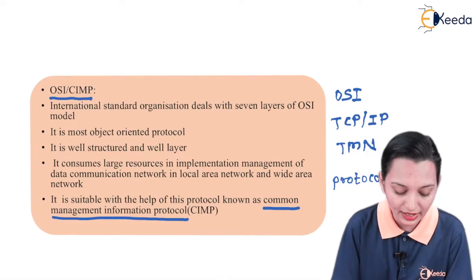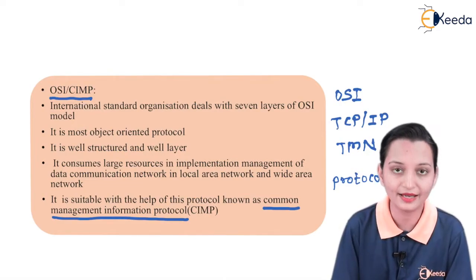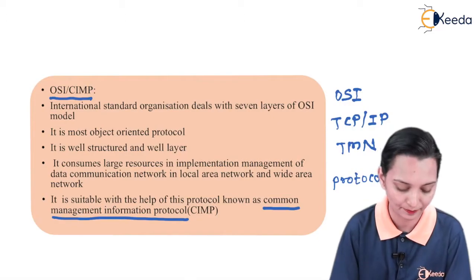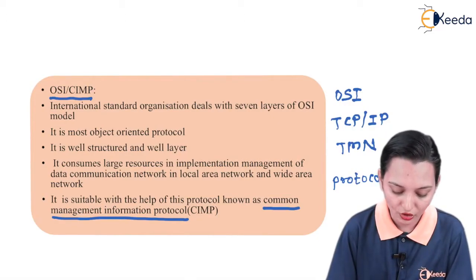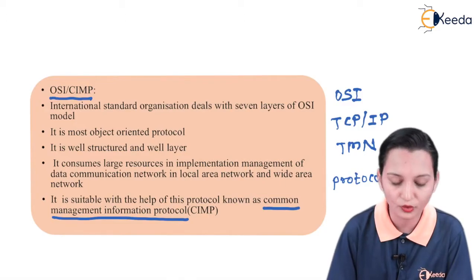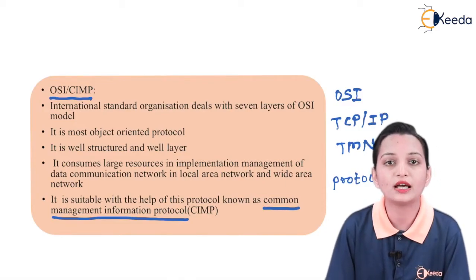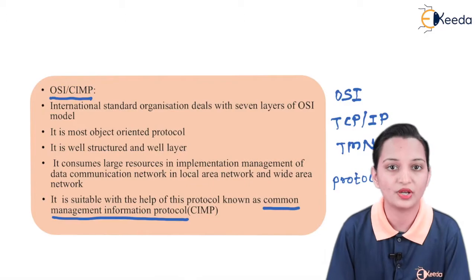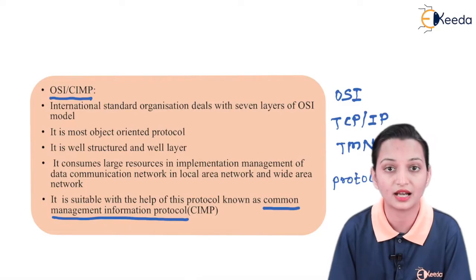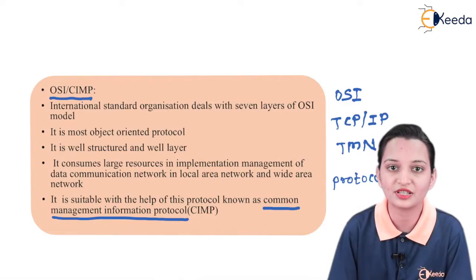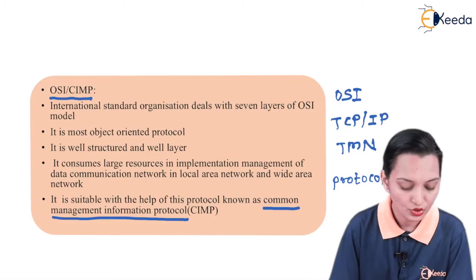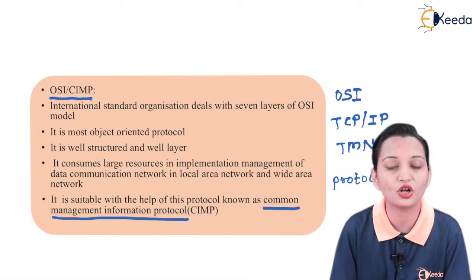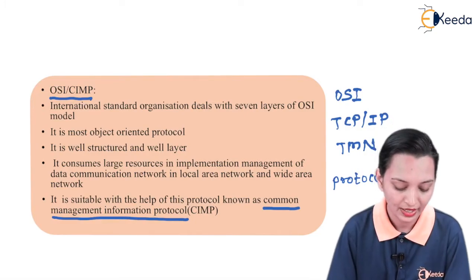The name of this network management standard is OSI-CMIP. It is an international standard organization that deals with the seven layers of the OSI model — physical layer, data link layer, network layer, transport layer, session layer, presentation layer, and application layer. CMIP deals with all seven layers of the OSI model and it is a most object-oriented protocol.